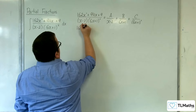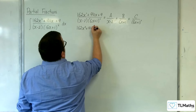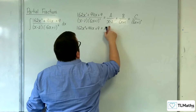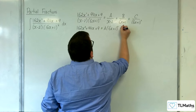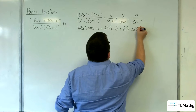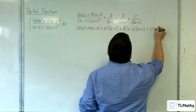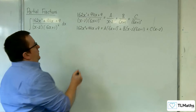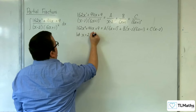Multiplying through by the denominator we get 162x squared plus 94x plus 9 is equivalent to A lots of (6x + 1) squared plus B lots of (x − 2)(6x + 1) plus C lots of (x − 2). So let's substitute in x equals 2 first.